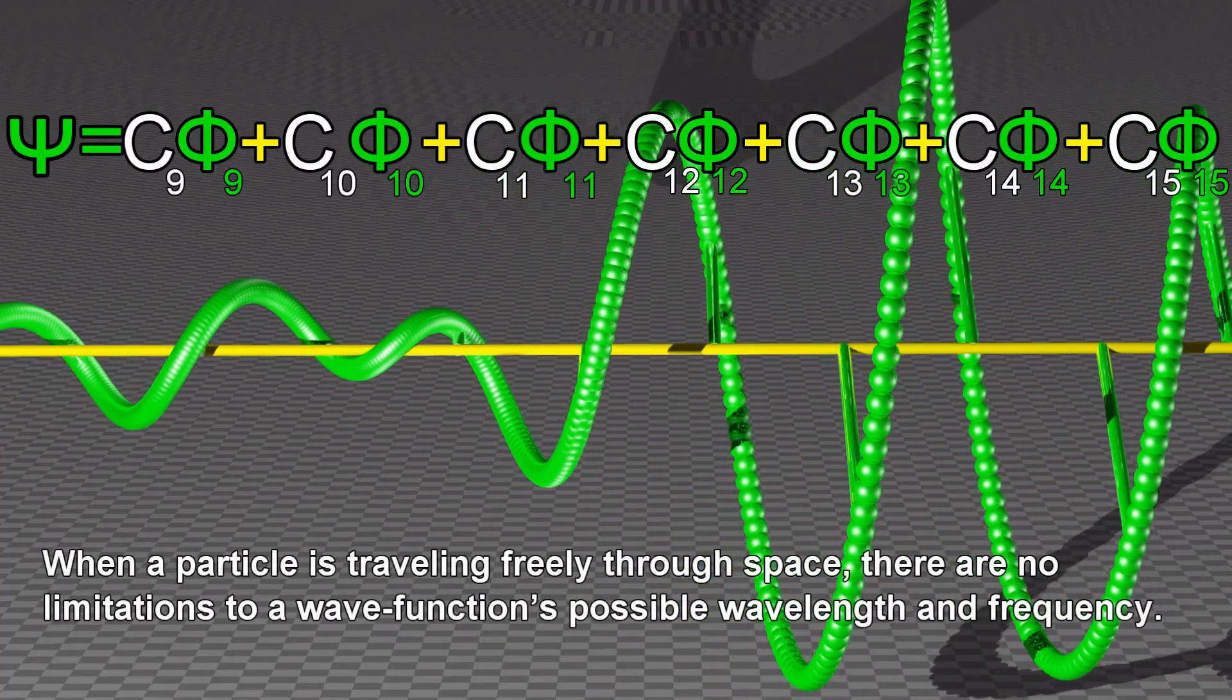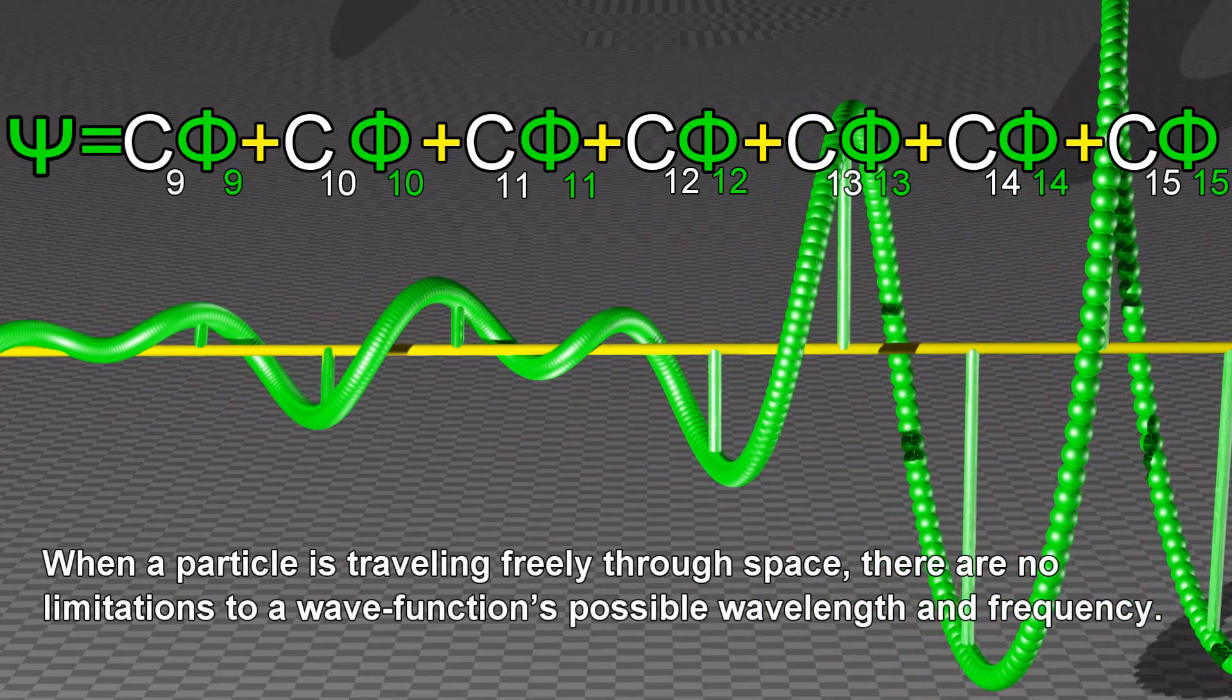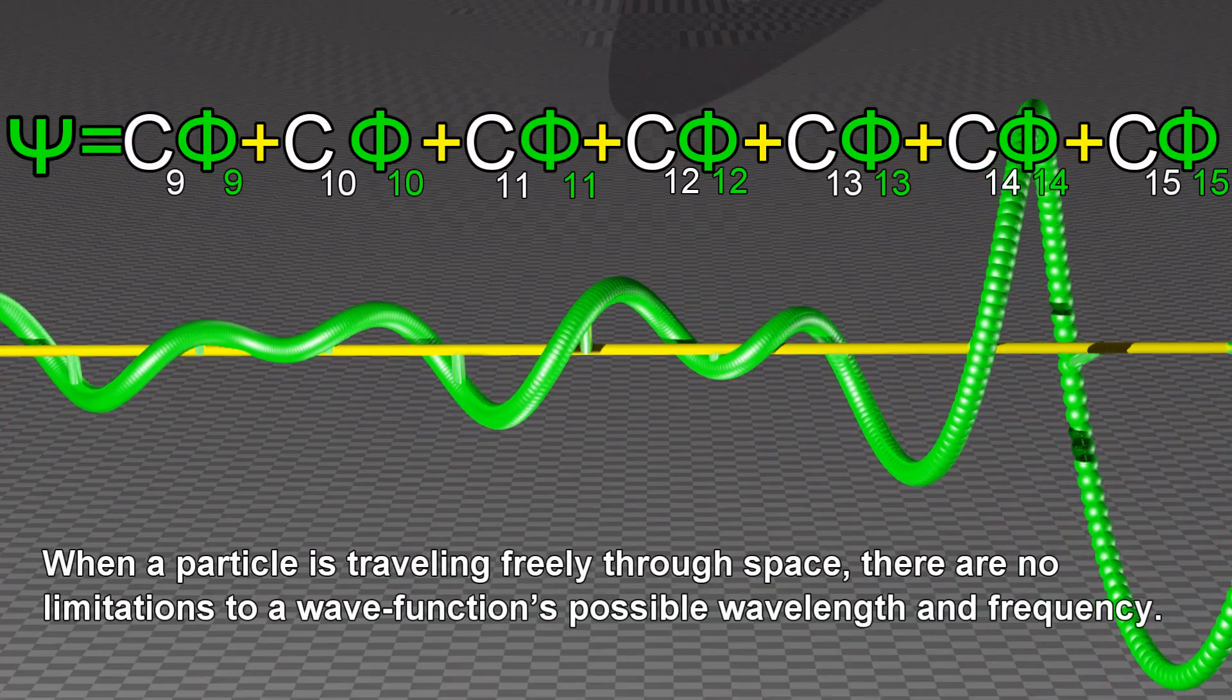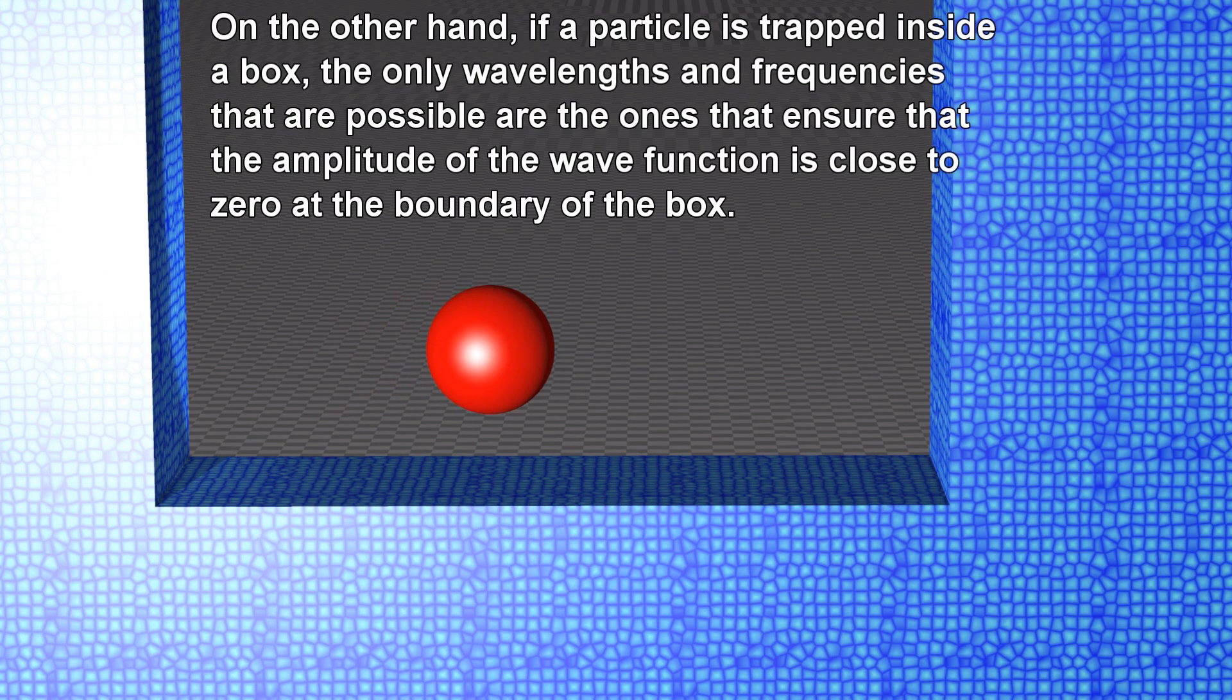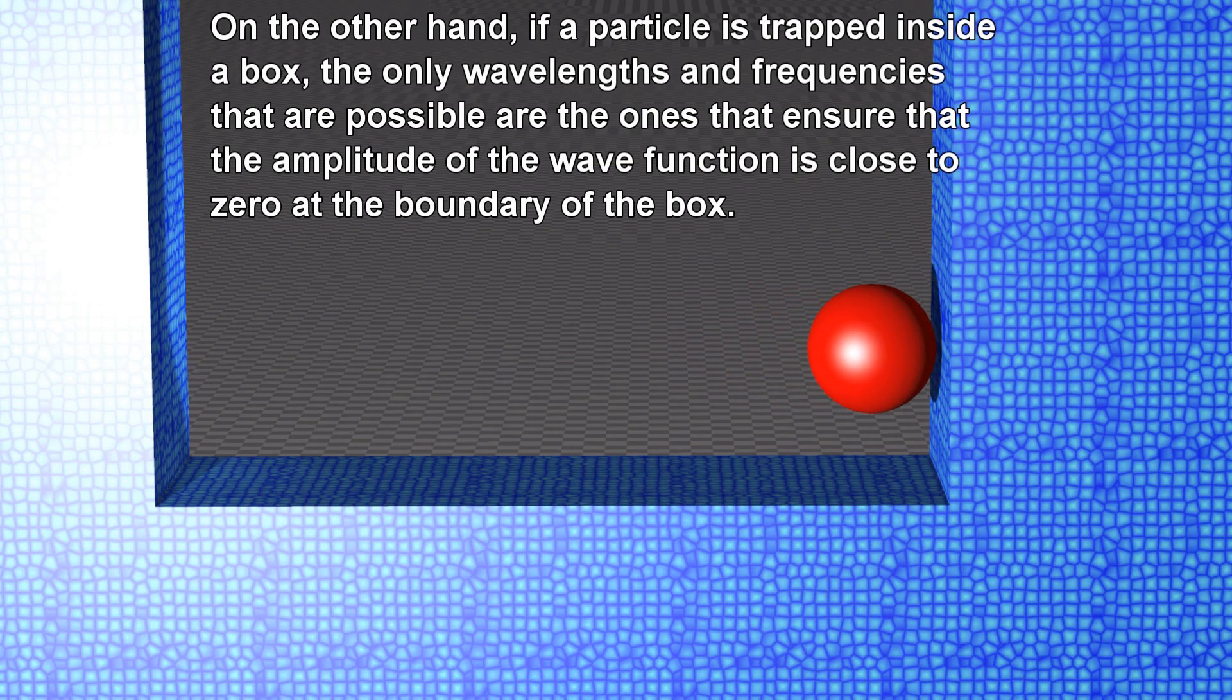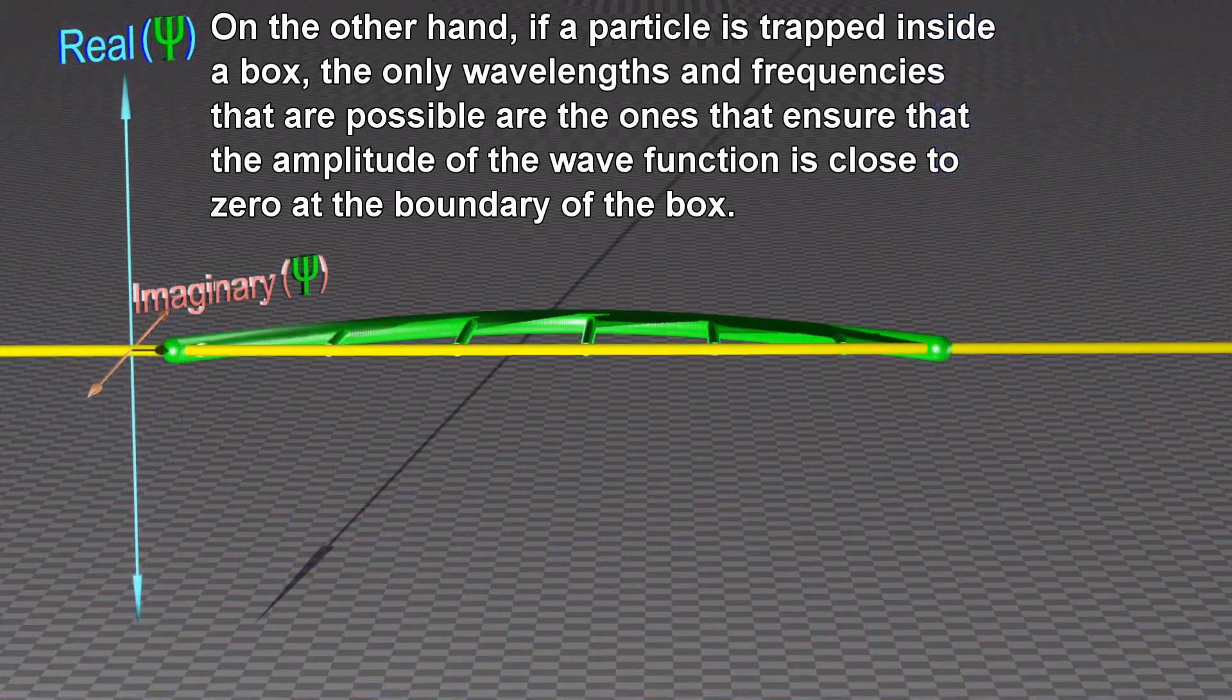When a particle is traveling freely through space, there are no limitations to a wave function's possible wavelength and frequency. On the other hand, if a particle is trapped inside a box, the only wavelengths and frequencies that are possible are the ones that ensure that the amplitude of the wave function is close to zero at the boundary of the box.